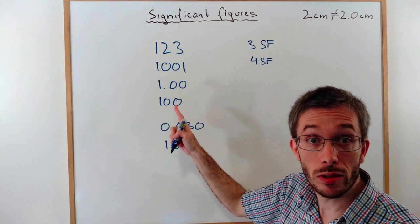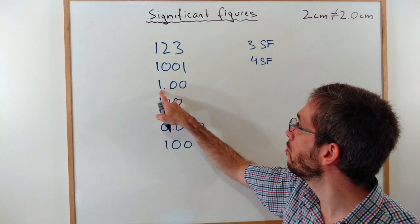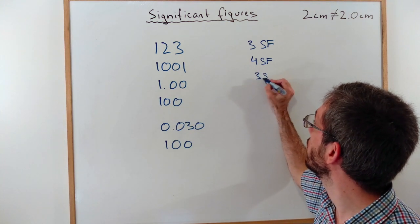The zeros also count if they are to the right of a number and a decimal point. So 1.00, these zeros count, 3 significant figures.